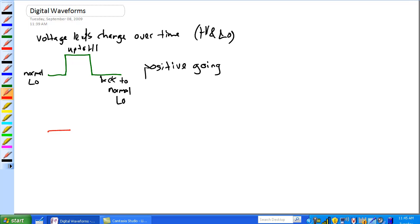So what's this? It's negative-going. It's going from normal high, down below, back up to its normal high.